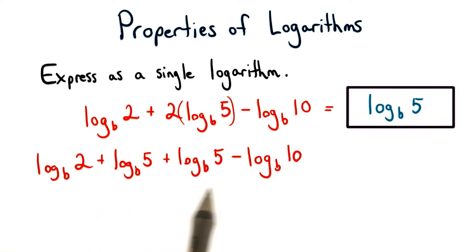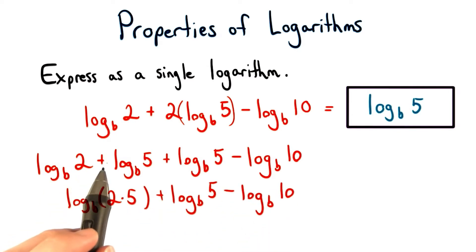Now I'm ready to apply my properties of logarithms. I know when I add two logarithms together that have the same base, I can really just multiply these numbers together. So I have log base b of 2 times 5.